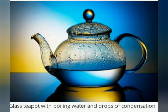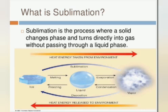Sublimation is the process in which a substance changes from its solid state directly to its gaseous state on heating, without passing through its liquid state. This process is known as sublimation. Examples include dry ice, camphor, naphthalene, ammonium chloride, iodine, and acetone.